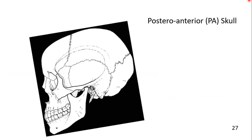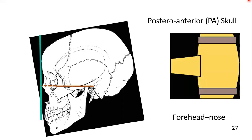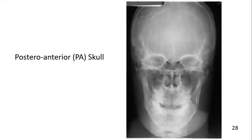Here you can see the animation — the forehead-nose position of the patient. The radiographic baseline is horizontal and perpendicular to the film. The central ray passes through the occipital area and hits the film at a right angle. This is the resultant radiograph showing the fracture in the angle area.